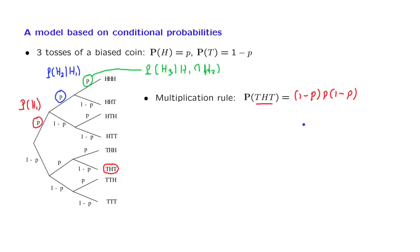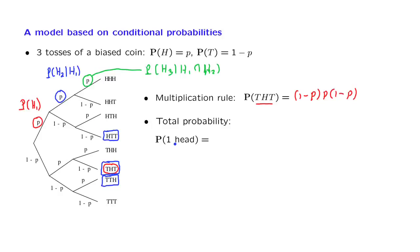Let us now calculate the probability of a certain event — the event that we obtain exactly one head in the three tosses. This event can happen in multiple ways, depending on whether the single head appears in the first, second, or third toss. The probability of each of these three outcomes is p times (1 minus p) squared. So the total probability of the event is 3p times (1 minus p) squared.